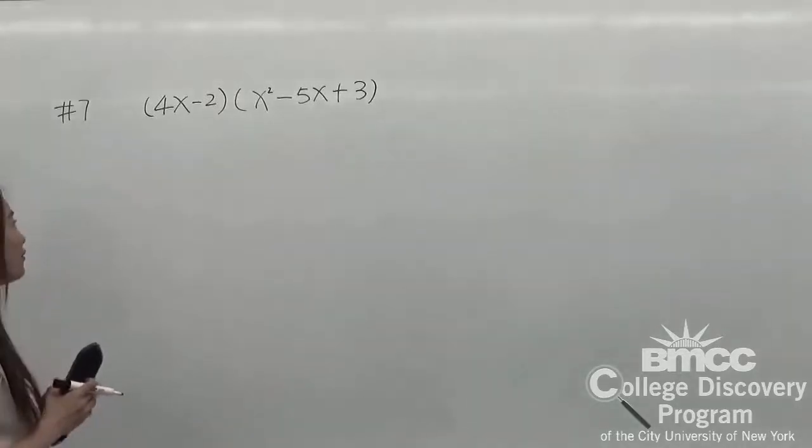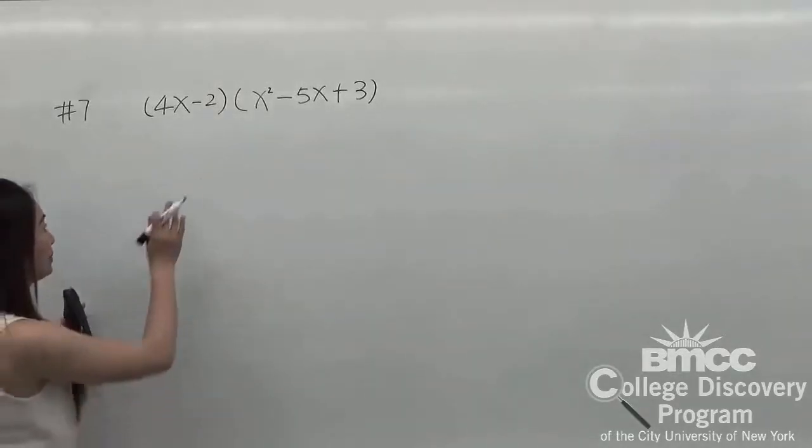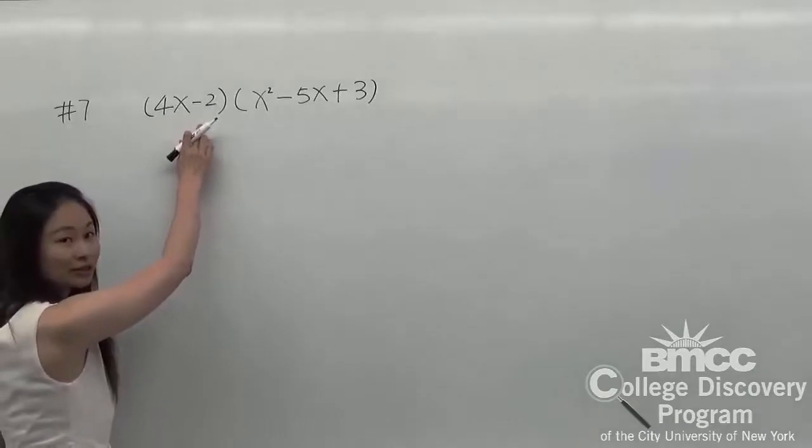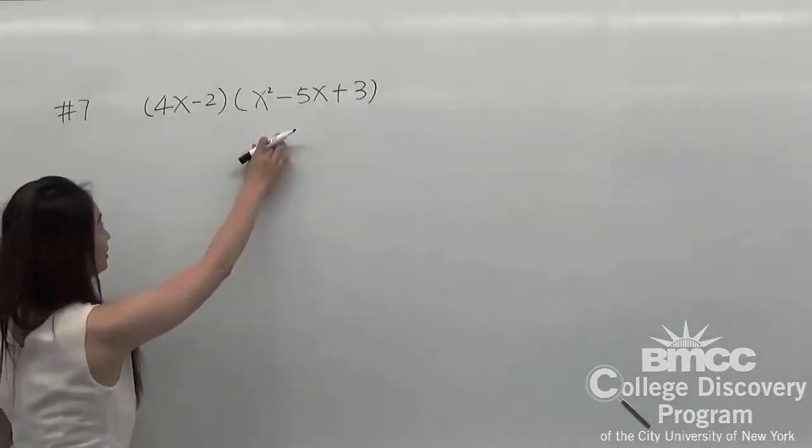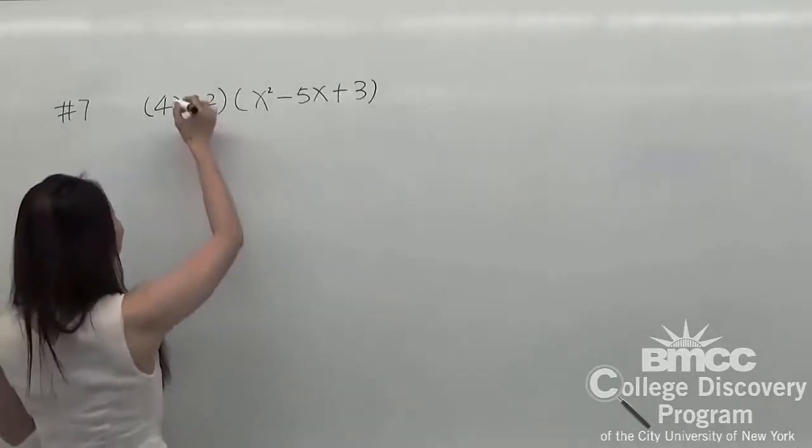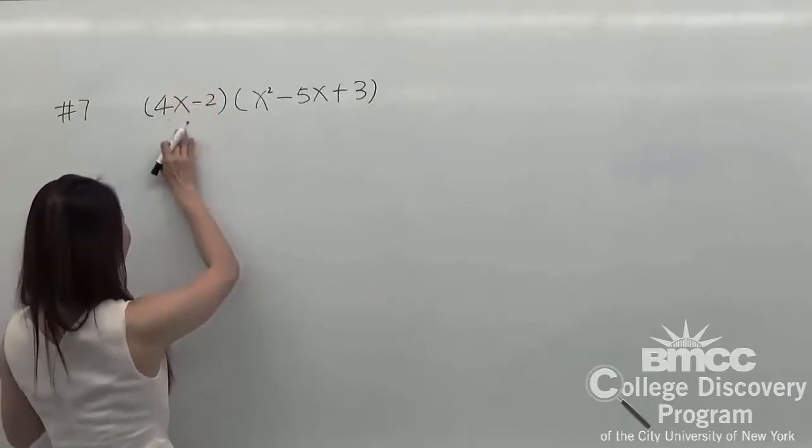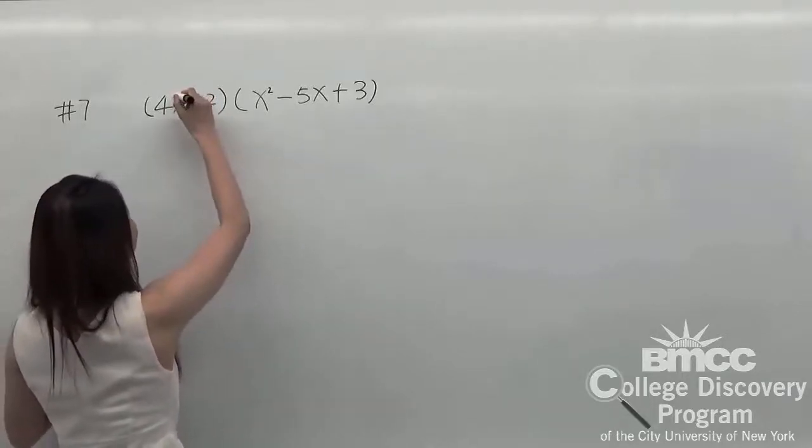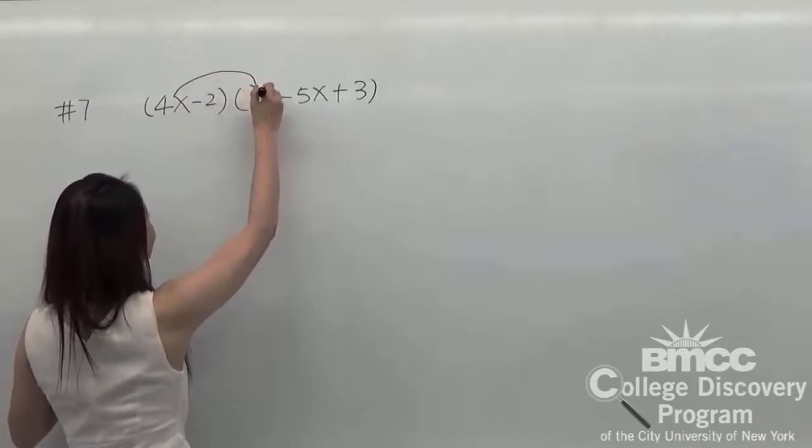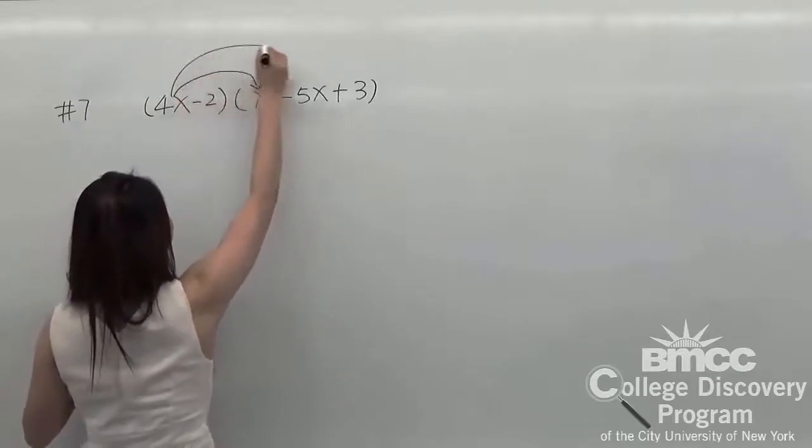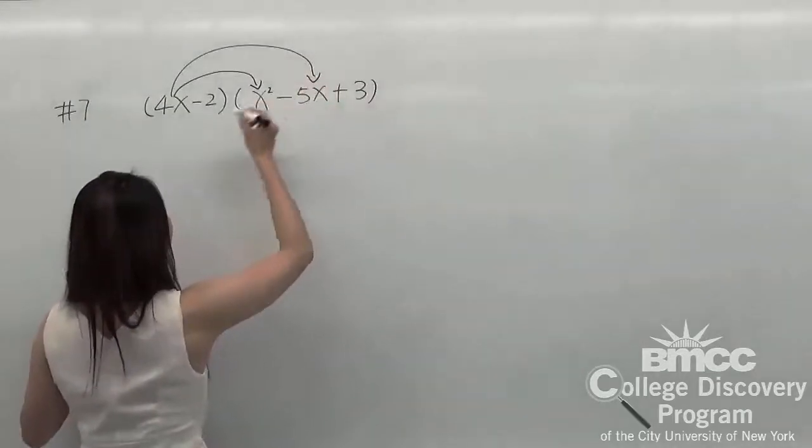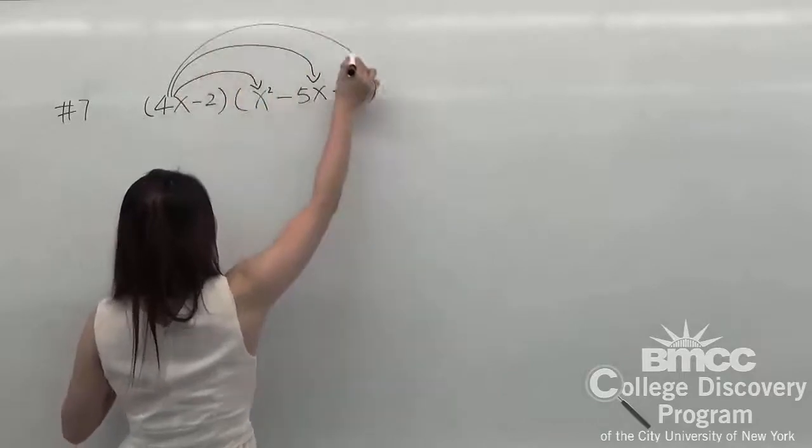Right now I'm going to use the FOIL method to distribute the first expression to the second expression. So the first thing we need to distribute the 4x. It will be 4x times x squared, 4x times 5x, and 4x times 3.